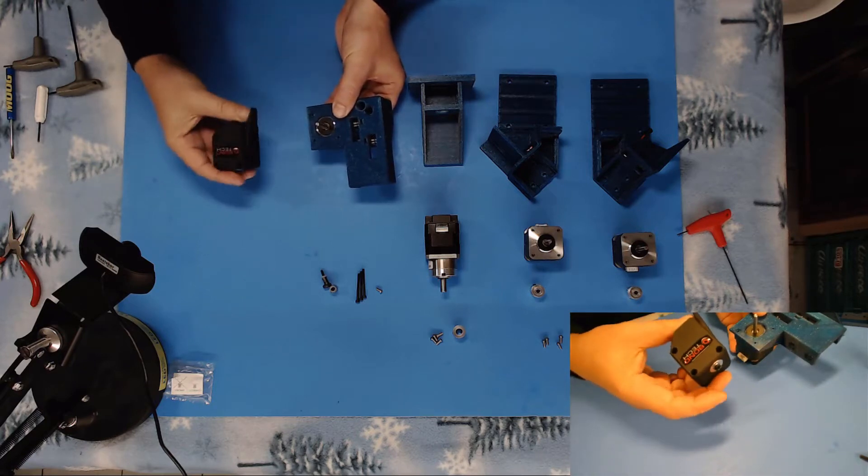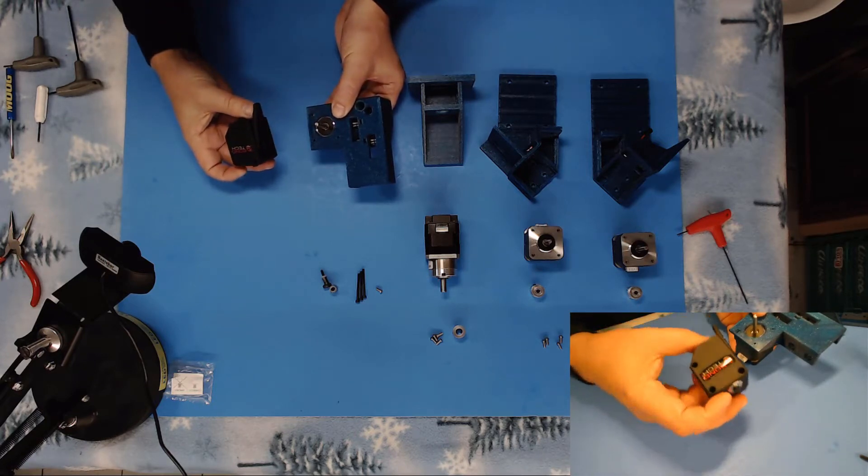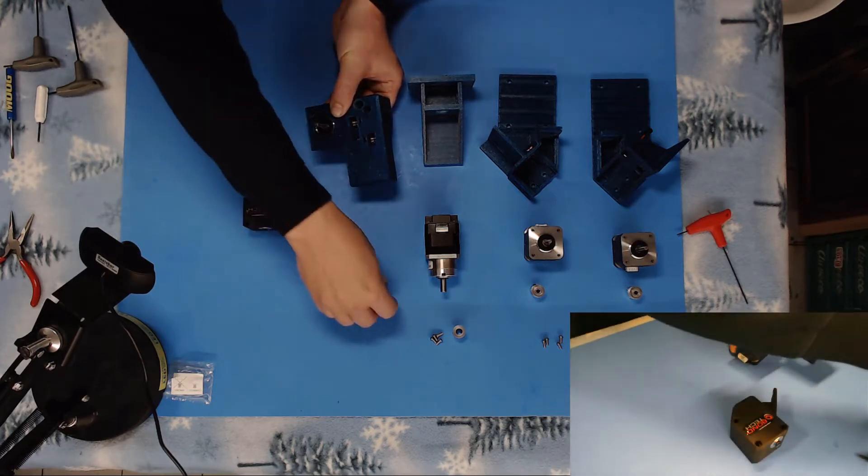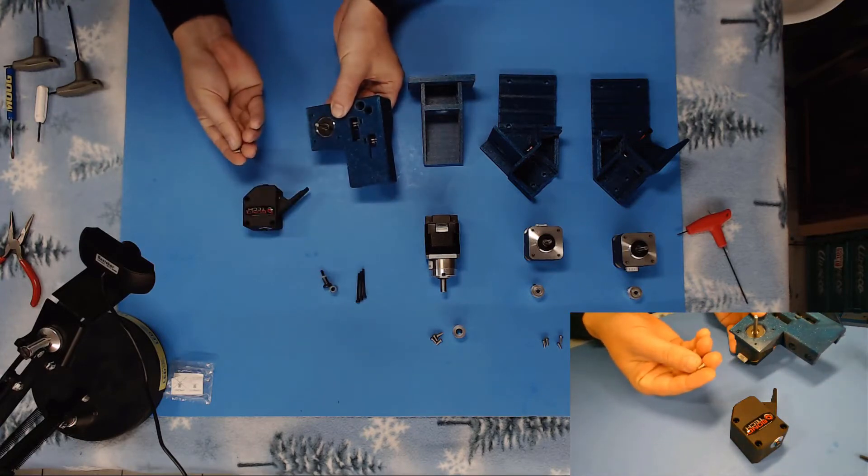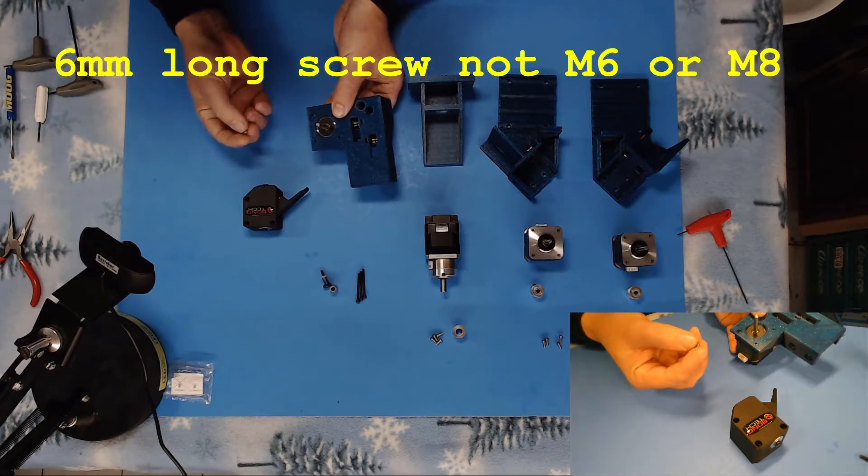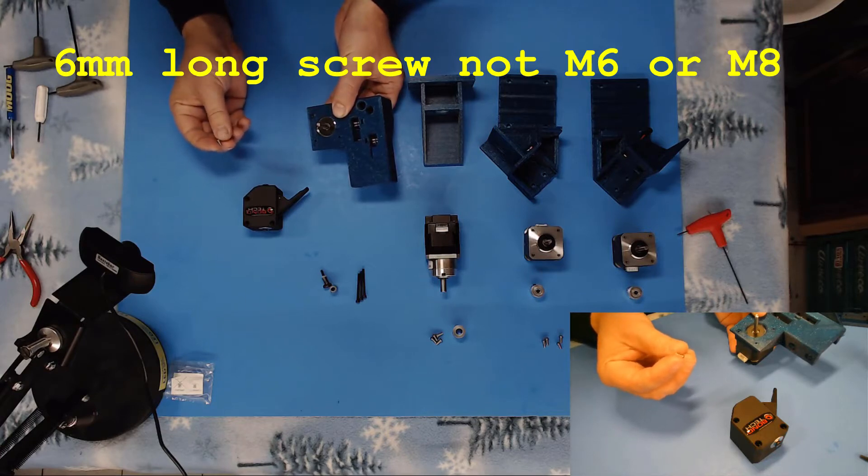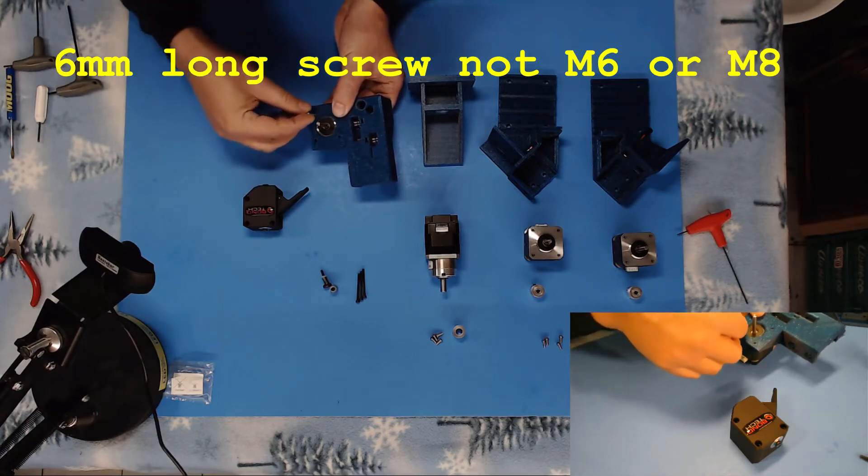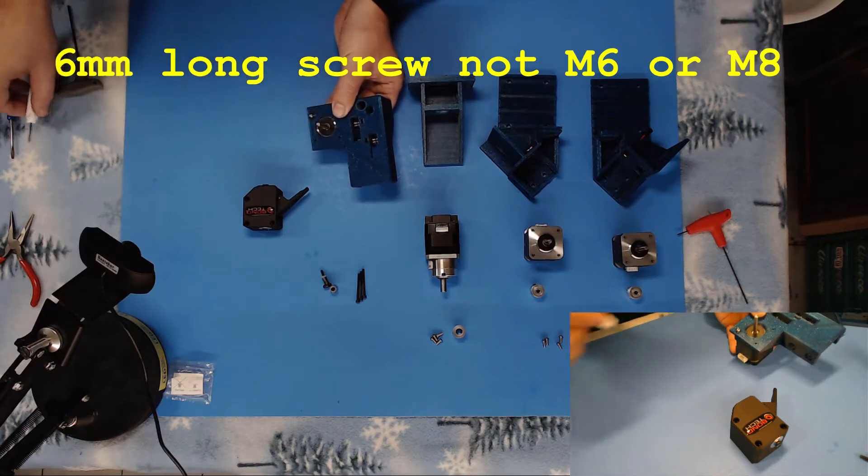Now, the Bondtech only uses three screws to hold it in place. I did make provisions for a fourth. You can use a metric eight screw. Now, probably actually need to use like a metric six. I ended up taking a Dremel and just taking like one millimeter off the end of this thing. So I wanted to get as much thread in there as possible. Make sure it's held nice and tight.